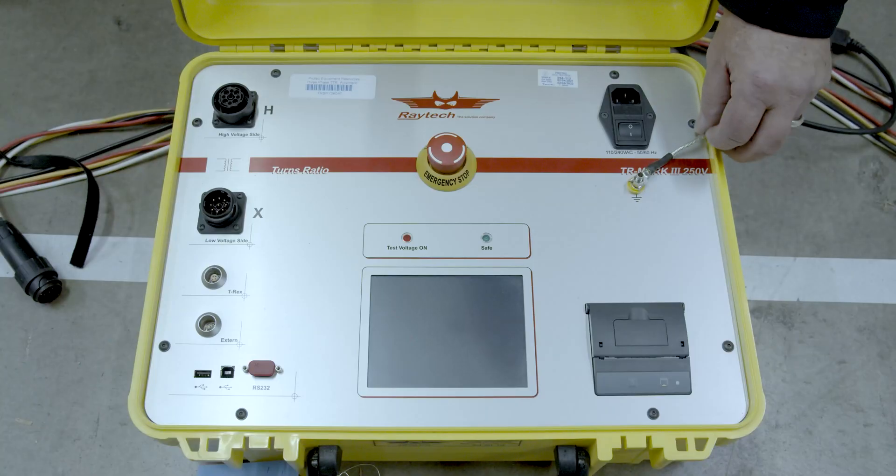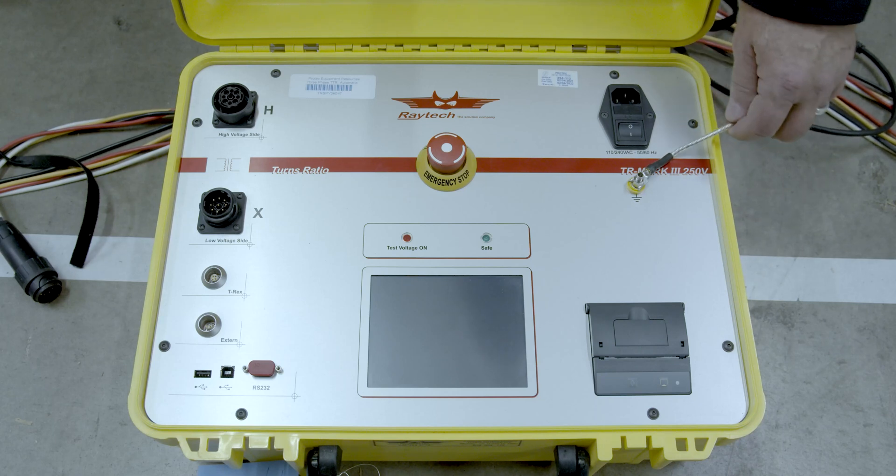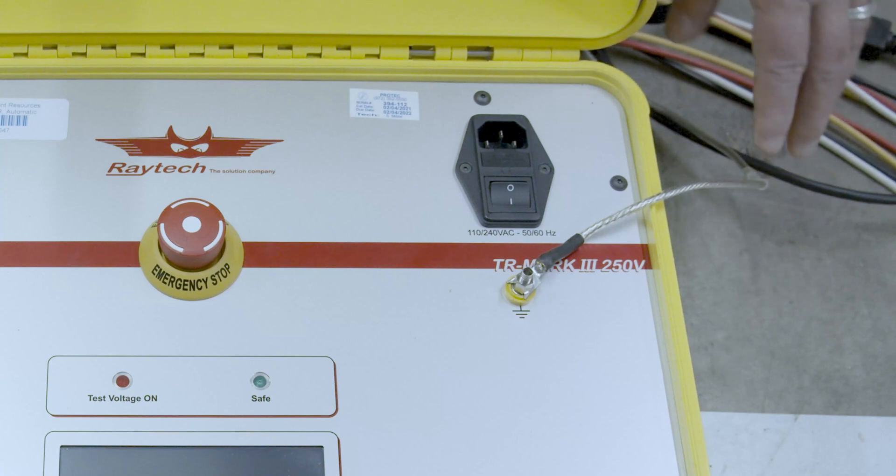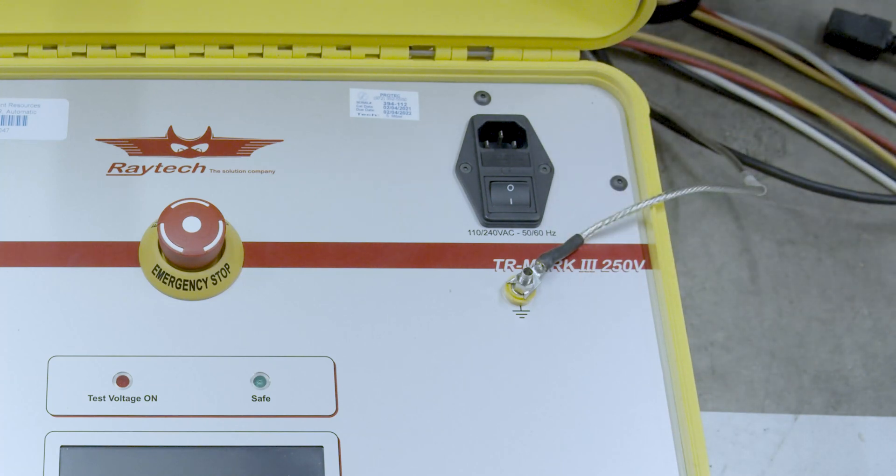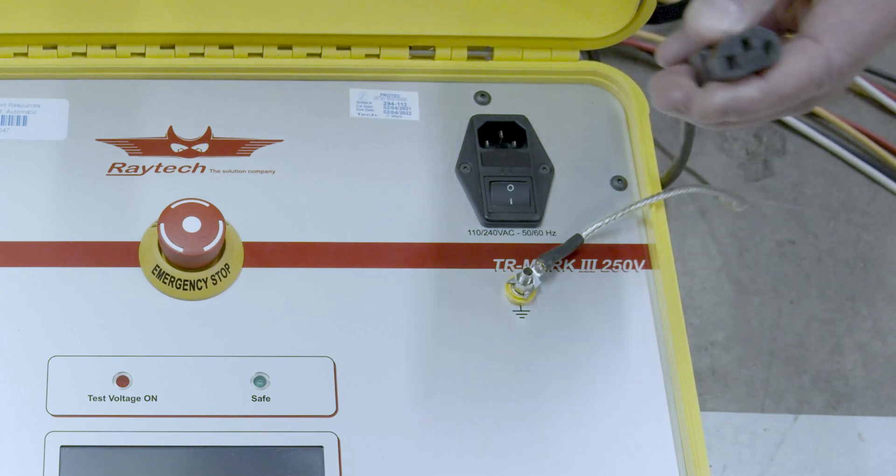The first and maybe one of the most important is the equipment ground. As you can see here, it's an external connection to the test equipment grounding the outer case of the equipment. We also have a ground that we get through the power cord to the instrument.